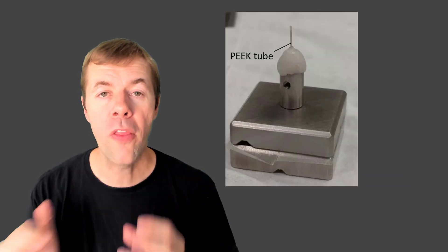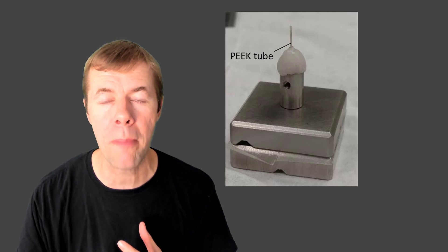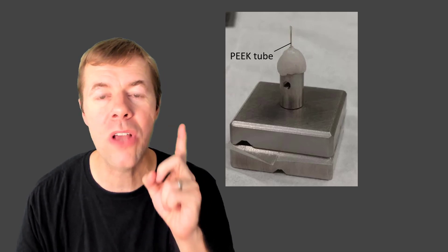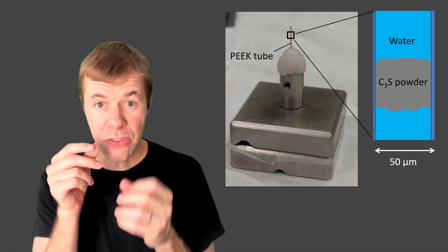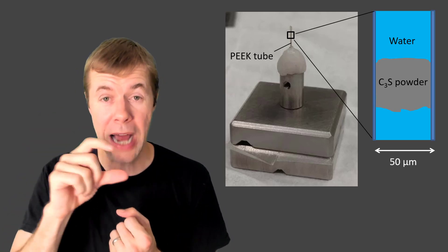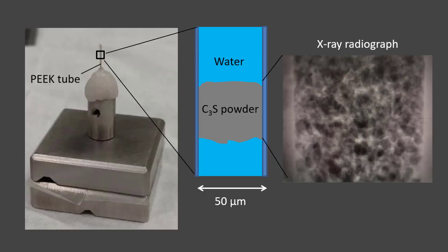Here's what our sample looked like on the beamline. You probably can't tell but that little bitty tube up there at the top, that is the size of a human hair. If we zoom in on it what you can see is inside that tube we've compressed powder down and then we've injected water through it and then we started imaging.